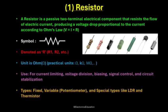Resistors are denoted by the letter R, followed by a number like R1, R2, or R3. The unit of resistance is the Ohm, represented by the Greek letter Omega. In practice, resistors come in various ranges, from just a few Ohms to hundreds of Kilohms or even Mega Ohms, depending on the required current control.